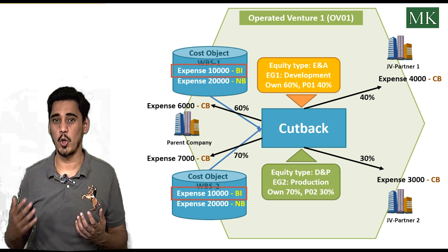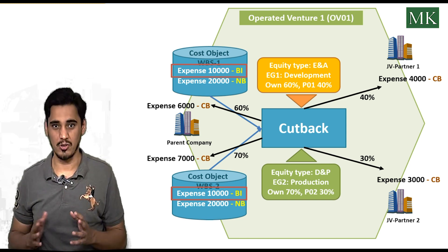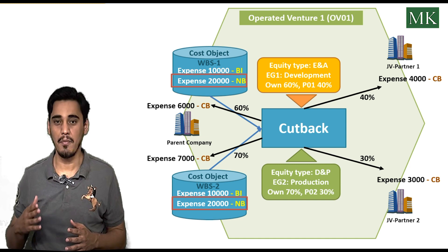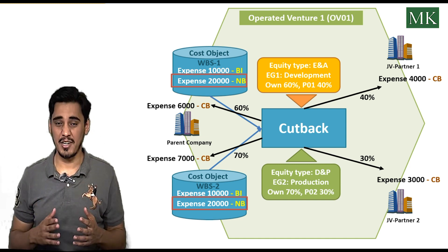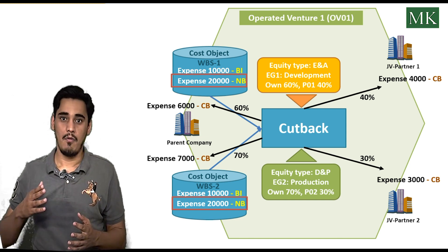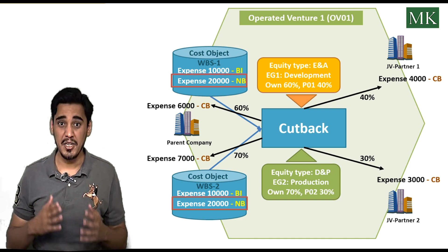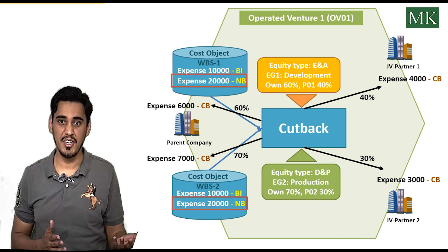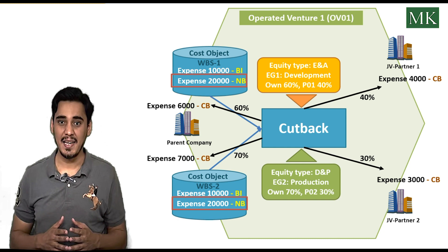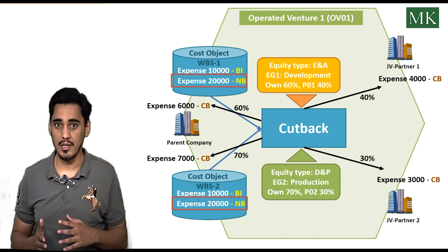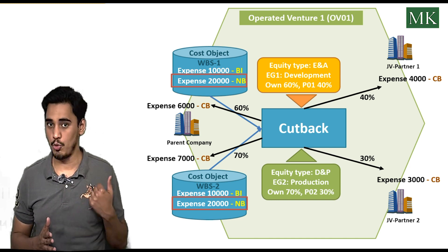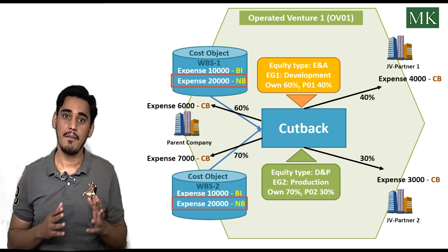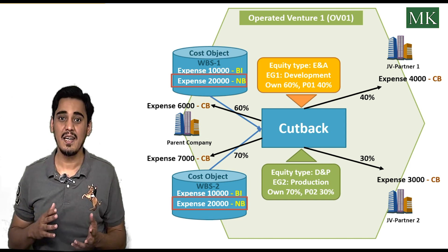This cutback process is also known as the gross-to-net process. The recovery indicator NB (non-billable) means any revenue or cost posted with this indicator will not be processed by the cutback transaction — it will be fully borne by the operator and will not be distributed between the joint venture partner and the operator. For example, an amount of 20,000 posted on WBS1 and WBS2 with recovery indicator NB is fully borne by the operator.